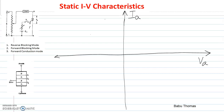Here you can see a thyristor which is connected across the supply voltage, which can be varied. You can apply a positive voltage or a negative voltage, so the magnitude of the voltage can be controlled and also reversed in the circuit shown on the left hand side. Now three modes of operation we will be discussing: one is the reverse blocking mode, second is the forward blocking mode, and third is the forward conduction mode.